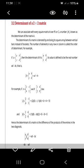A determinant is denoted by enclosing its square array between vertical bars instead of brackets. The number of elements in any row or column is called the order of the determinant.